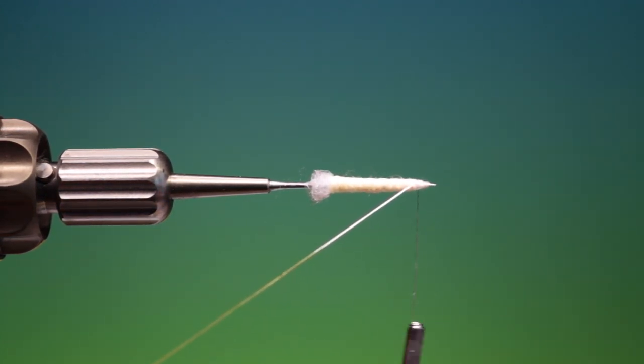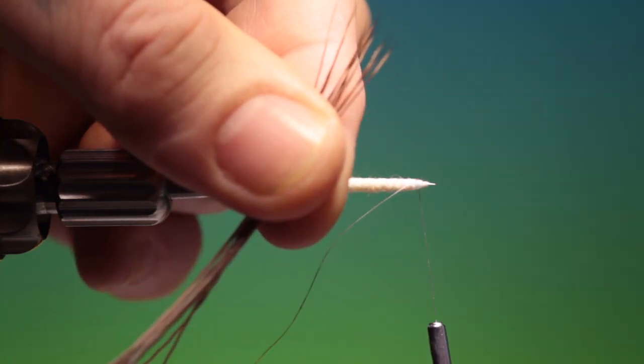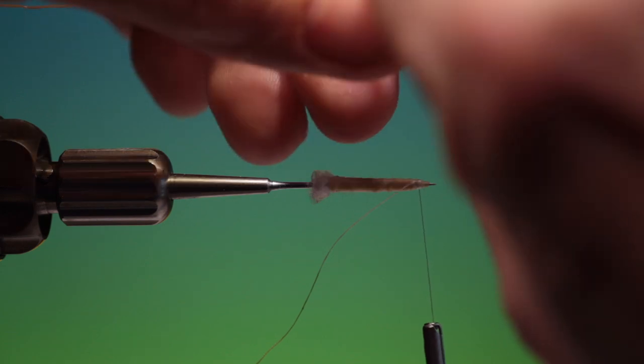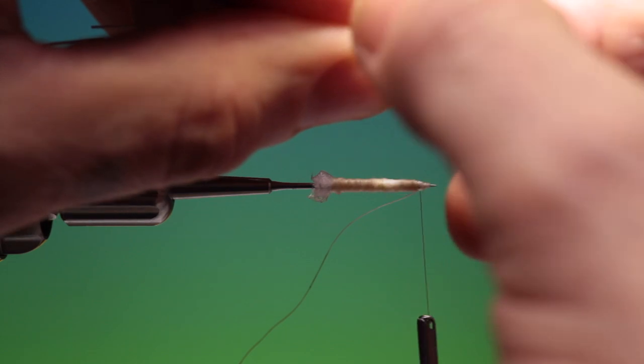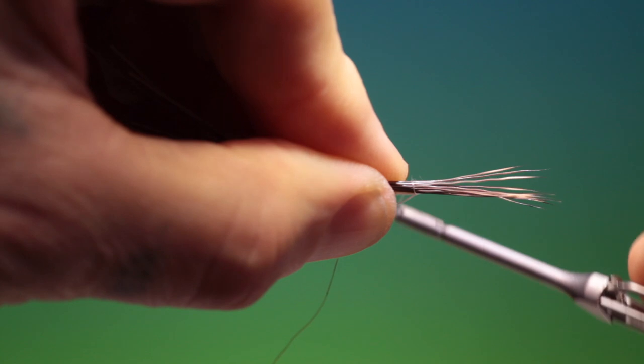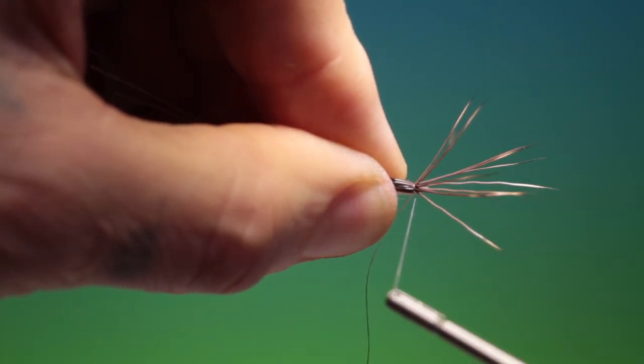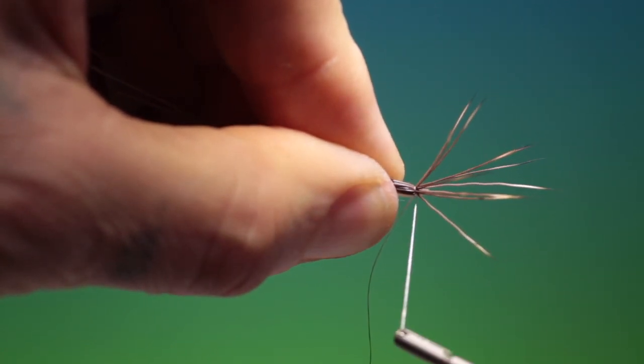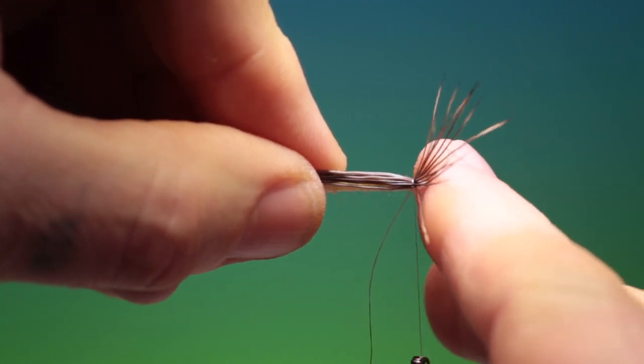Then a little bunch of elk rump. That broken tip there, don't want that. So we measure, I'll just spin that around. Measure the length of the tail, about there. Tie this in. Like so. That's good.